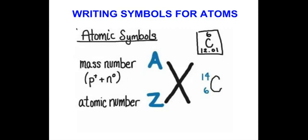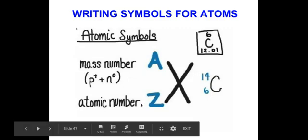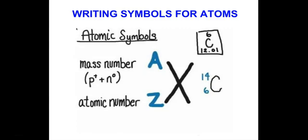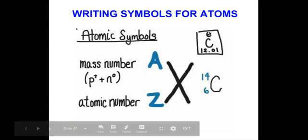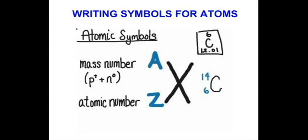On the subscript, still on the left side, you see the symbol Z, which means atomic number. The atomic number of the element can be seen in the periodic table — it's the number on top of the symbol of the element. Please do not refer to the values below the symbol of the element for the mass number, because what you see below on the periodic table is already the average atomic mass of all the isotopes of that element.